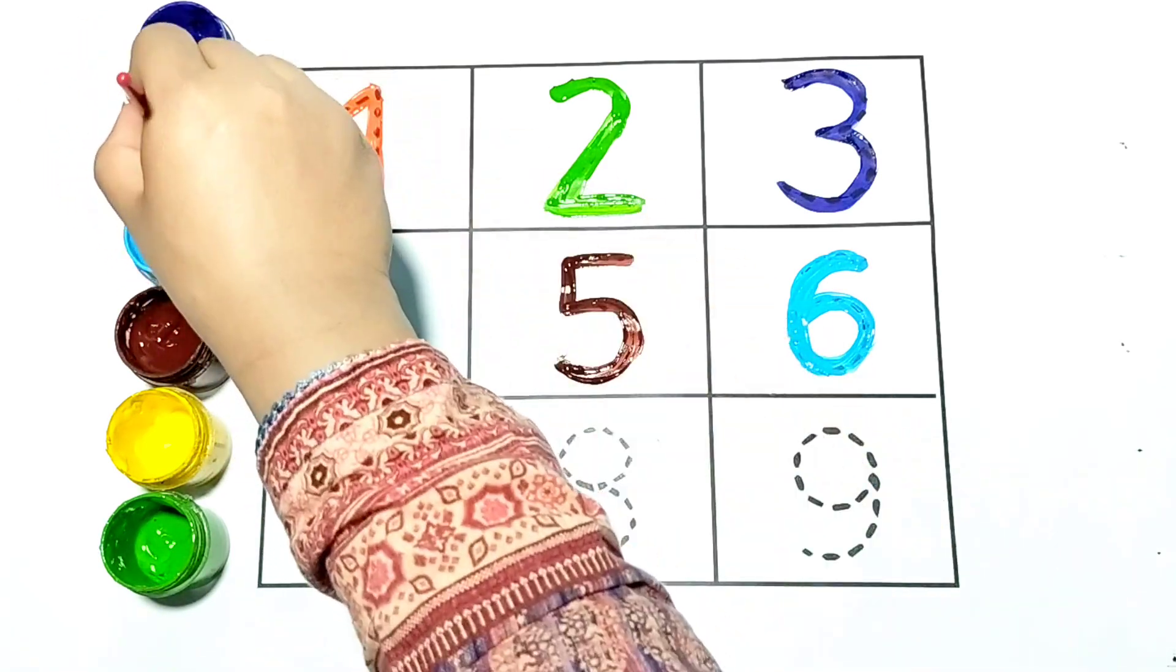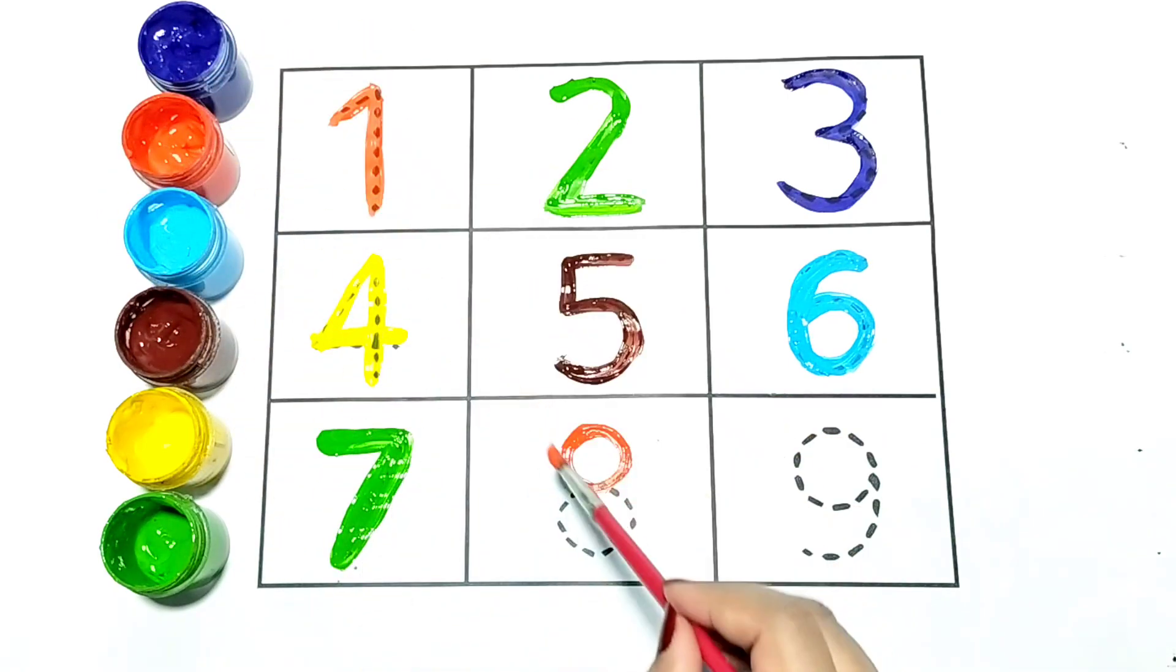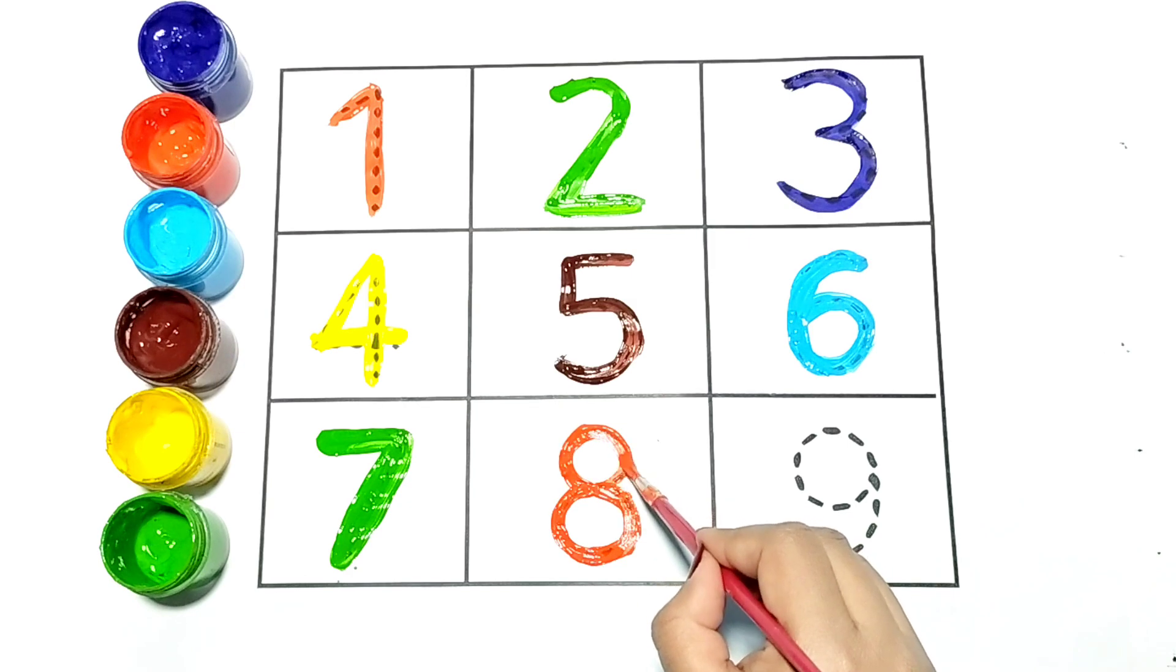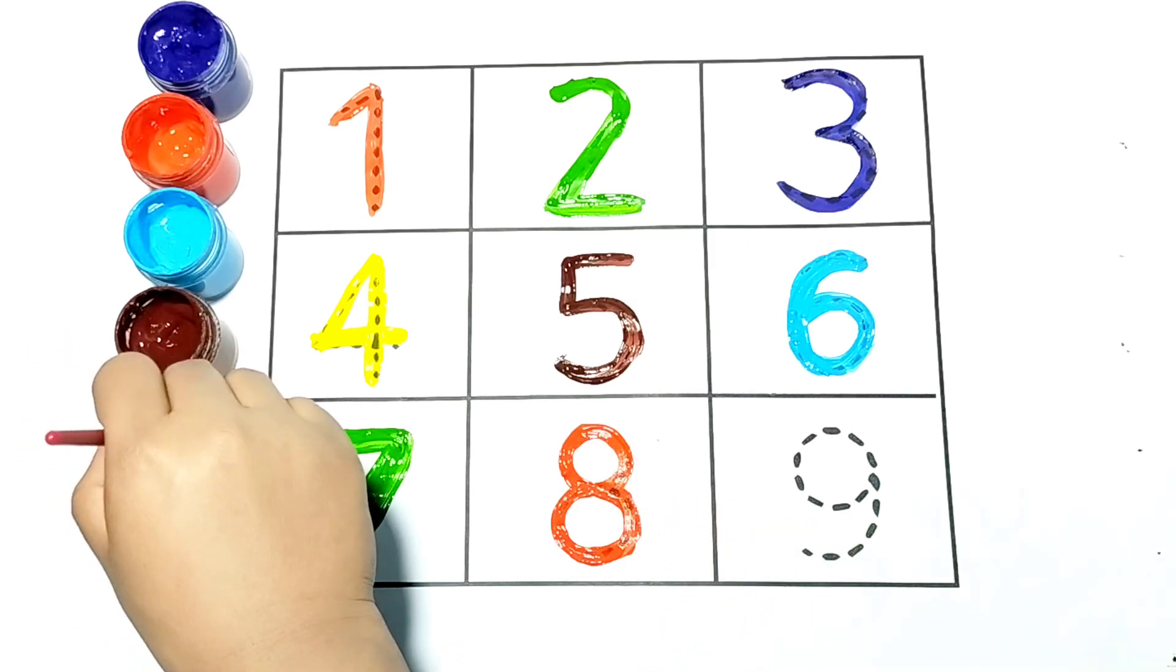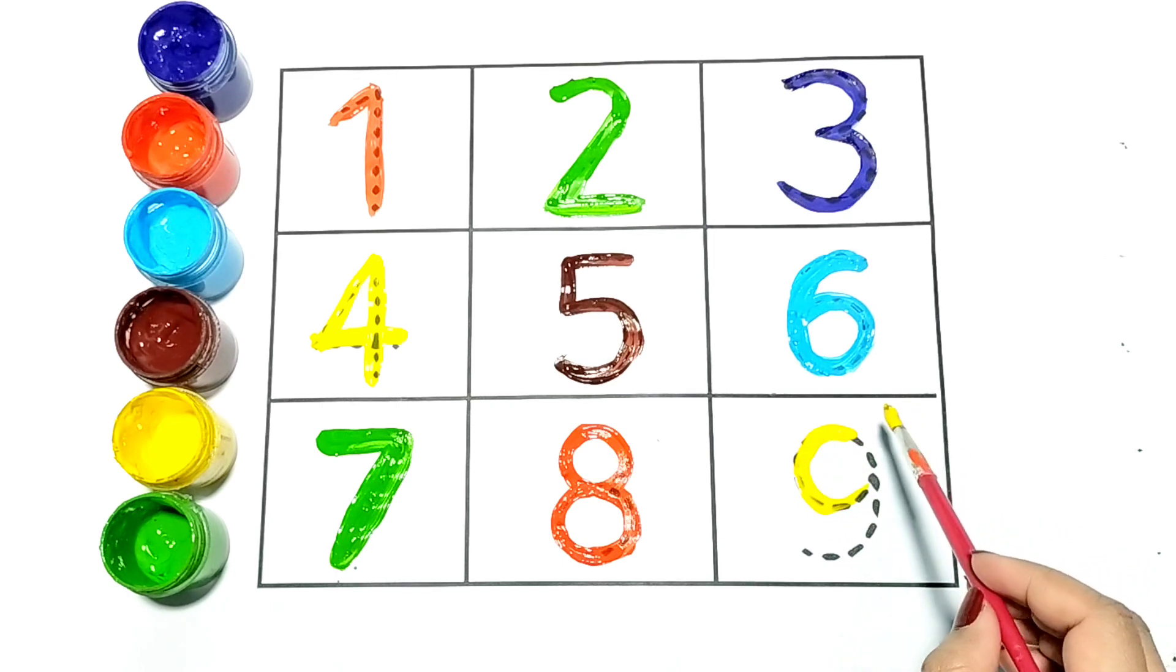Now I am writing 8. Kids, repeat with me. It is number 8. Now 9. I am writing 9 with yellow color.